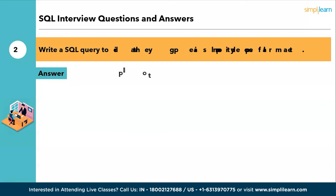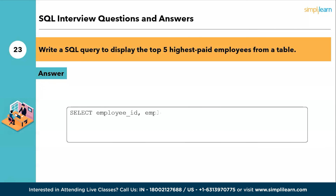The twenty-third question: write a SQL query to display the top five highest paid employees from a table. The answer is: SELECT employee_id, employee_name, salary FROM employees ORDER BY salary DESC LIMIT 5. The data will be organized in descending order — highest salary first through fifth highest — and the LIMIT clause restricts the result to only five rows.